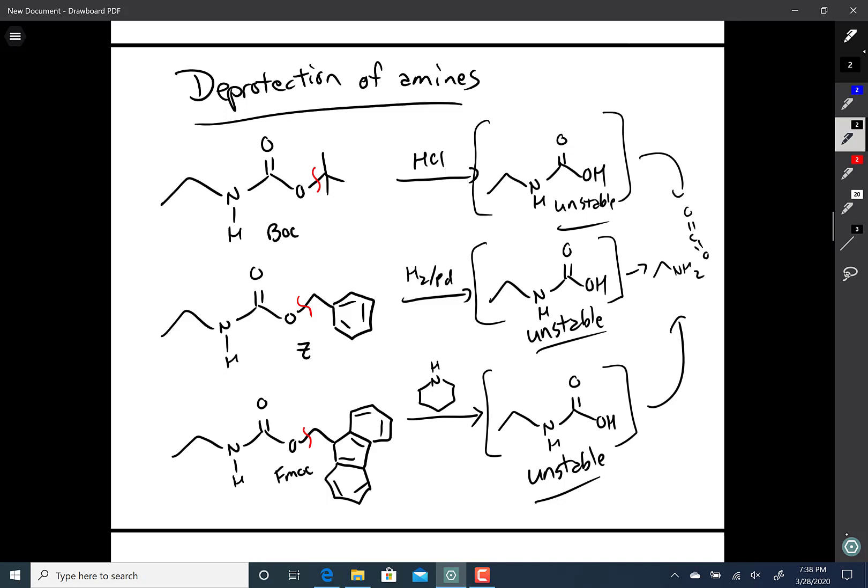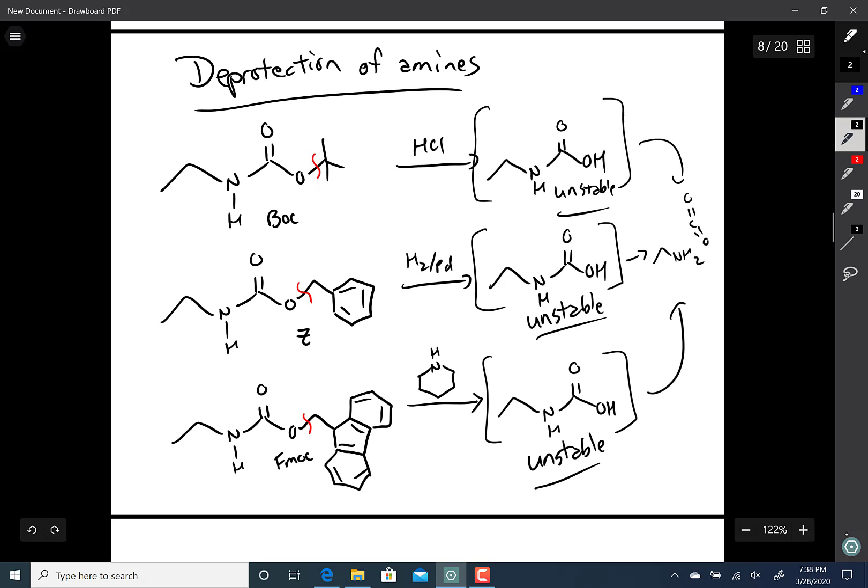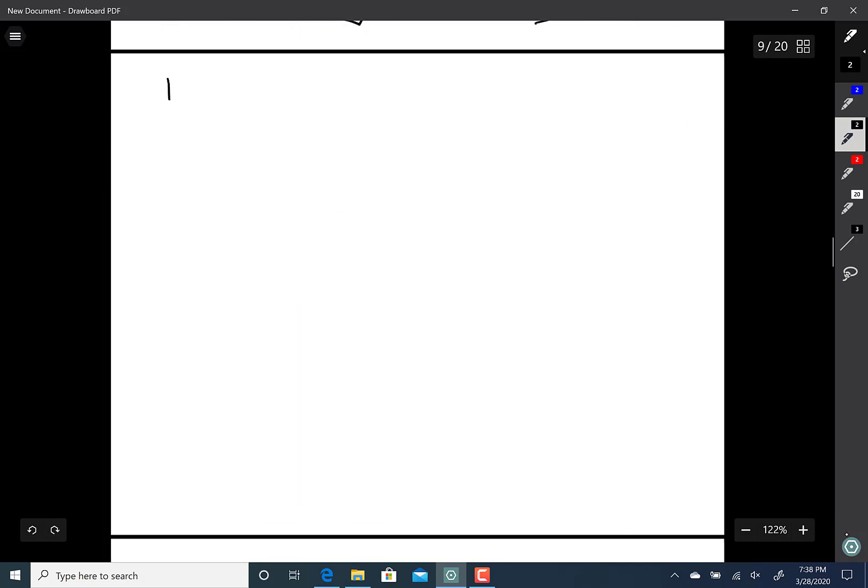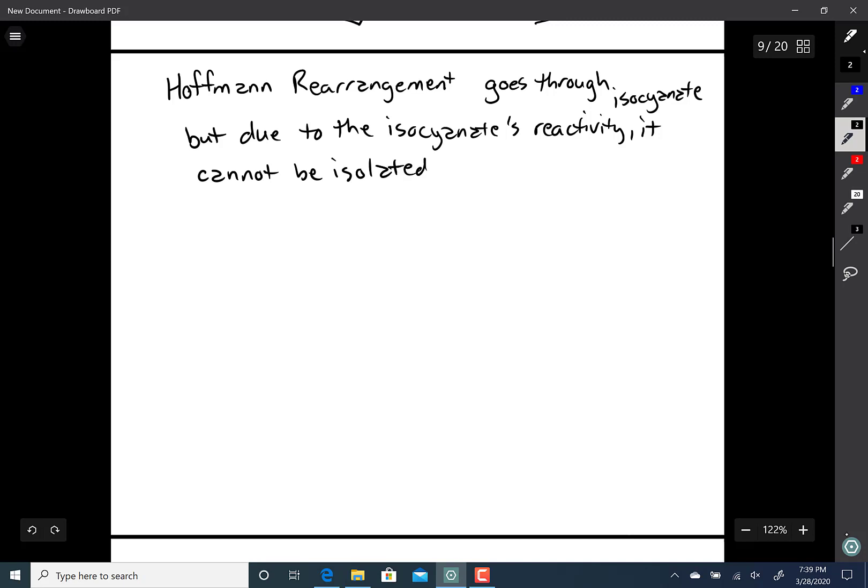So, now a sort of a side note there. But there it is. Where were we? The Hoffman. The Hoffman rearrangement, it goes through an isocyanate, but due to the isocyanate's reactivity, it cannot be isolated.